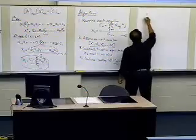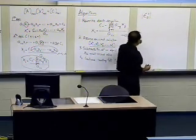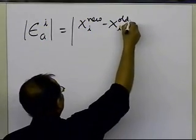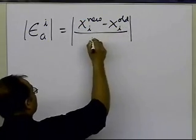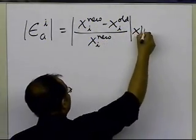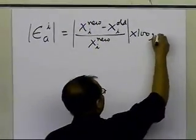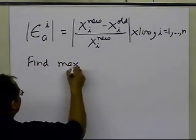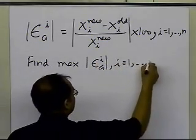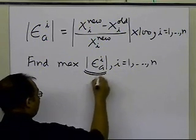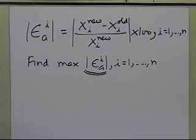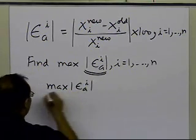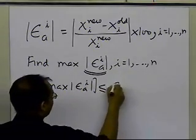Since we have n unknowns, we'll have n values for the absolute relative approximate error. The absolute relative approximate error for each unknown is calculated as the absolute value of the new x minus the old x, divided by x_i(new), multiplied by 100. At the end of each iteration you calculate this for all i from 1 to n, then find the maximum of all these epsilon_a values, and compare that maximum against the pre-specified tolerance.